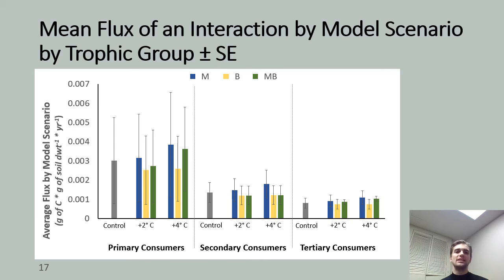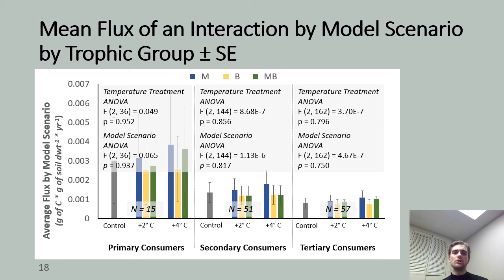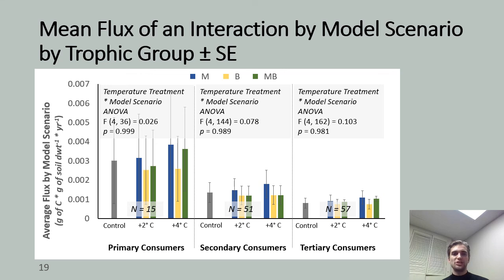Across all three model scenarios, we can see that flux tends to be inversely related to the trophic order of a given consumer. When we consider warming-related metabolic changes in both individuals and populations of soil fauna, flux tends to increase with temperature at the level of the community. I also conducted statistical analyses to test for differences in flux within each trophic grouping by both temperature treatment and model scenario. Changes in flux were not significantly different for any warming treatment or model scenario for any trophic grouping, and no combination of warming treatment and model scenario had a significant effect on flux. This is likely because of limitations in the resolution of the food web, as reflected by the large standard error in the data.